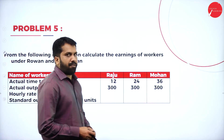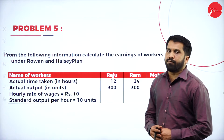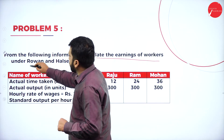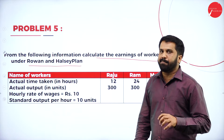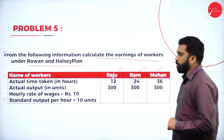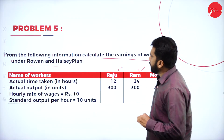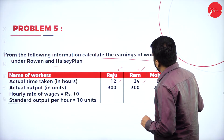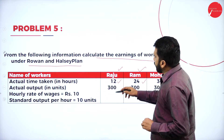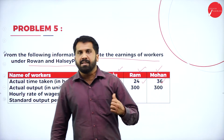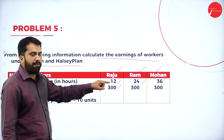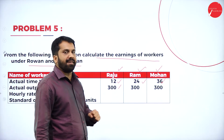Now the last problem for today — problem number 5. From the following information, calculate the earnings of workers under the Rowan as well as Halsey plan. There are 3 workers: Raju, Ram, and Mohan. Their actual time taken is 12, 24, and 36 hours respectively. All three have produced 300 units each. The hourly rate of wages is 10 rupees per hour.